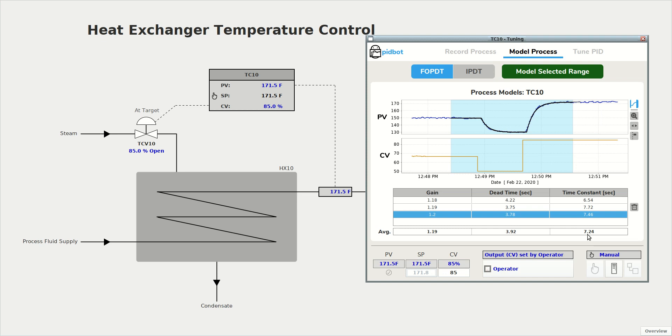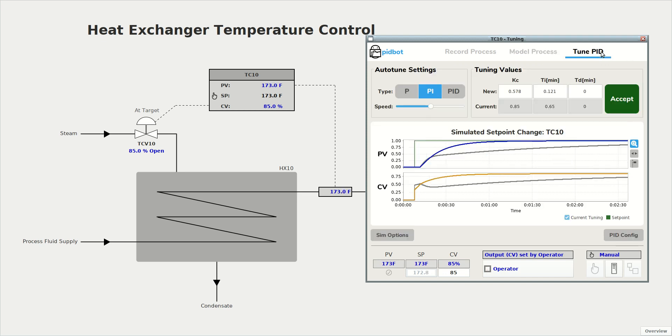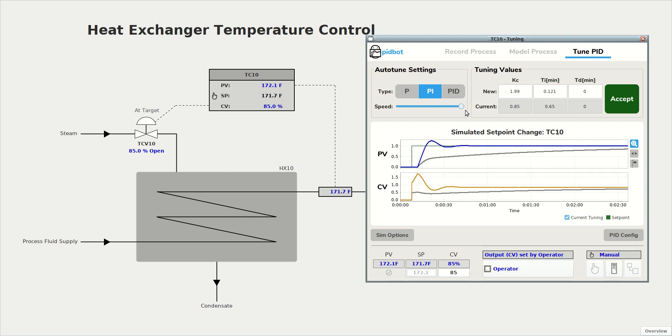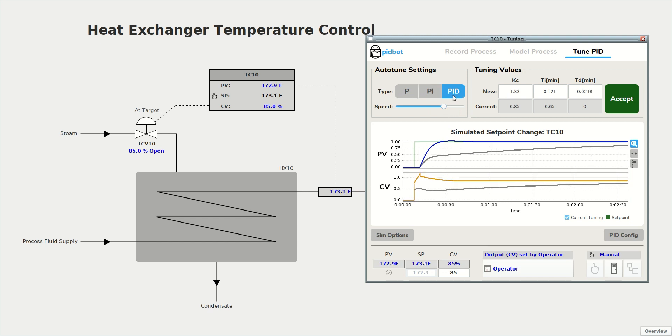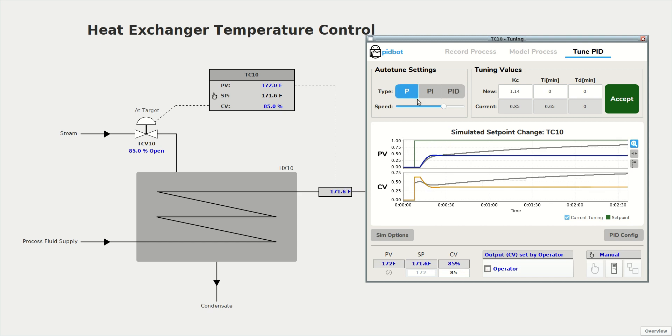So that looks pretty good. We can now go to the third tab where we tune our PID controller. Here's a simulated set point step response with our existing tuning values shown in gray here. And the temperature response looks a bit sluggish. The blue line represents the response with the new tuning values that are suggested by PIDBOT. And we can play around with those values. We can make that go faster if we like or slower. Or maybe we want to do proportional, integral and derivative. Or maybe proportional only.